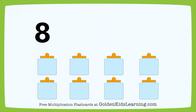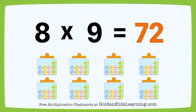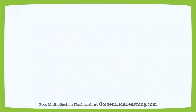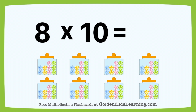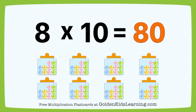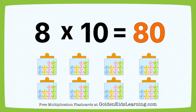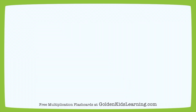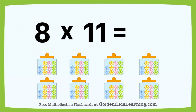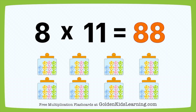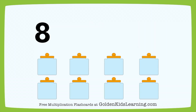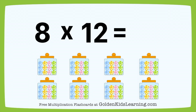8 times 9 equals 72. 8 times 10 equals 80. 8 times 11 equals 88. 8 times 12 equals 96.